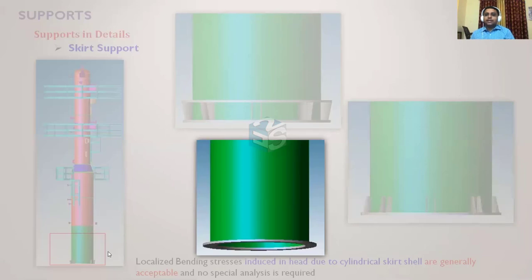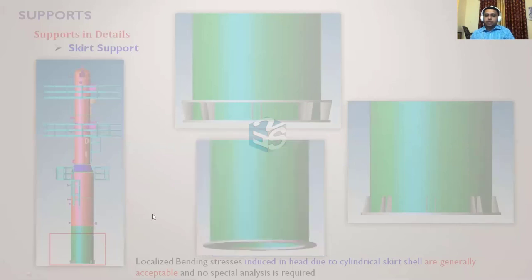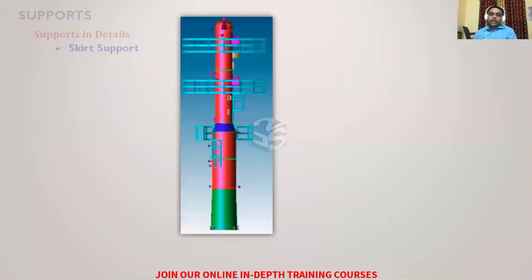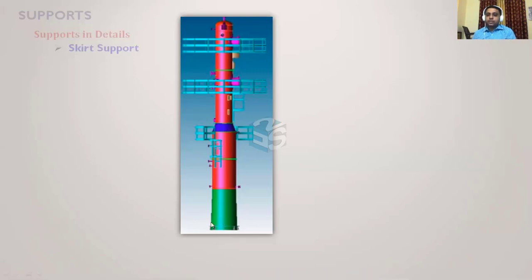For a cylindrical type of skirt support, the localized stresses at the junction are manageable — no special analysis or junction stress calculations are required; this is confirmed in codes and in PVLite software as well. However, if this is a conical skirt, and if the equipment height and loads are high, the section modulus at the base is insufficient, or the deflection of the entire column needs to be controlled, we want a larger base at the bottom.